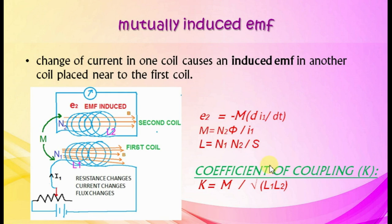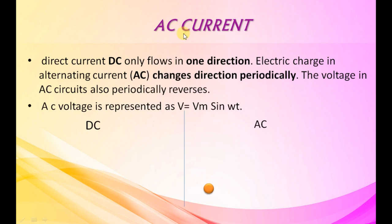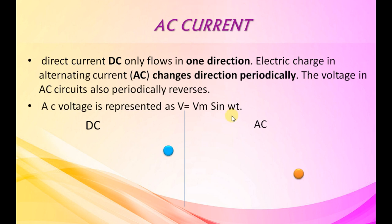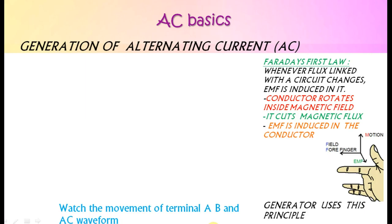AC current or alternating current. Direct current DC flows in one direction only. Electric charge in alternating current changes direction periodically, and AC voltage also periodically reverses. AC voltage is represented as V equals Vm sin(omega t), where Vm is the maximum value and omega t is the angle at time t. Generation of AC is shown in the animation.